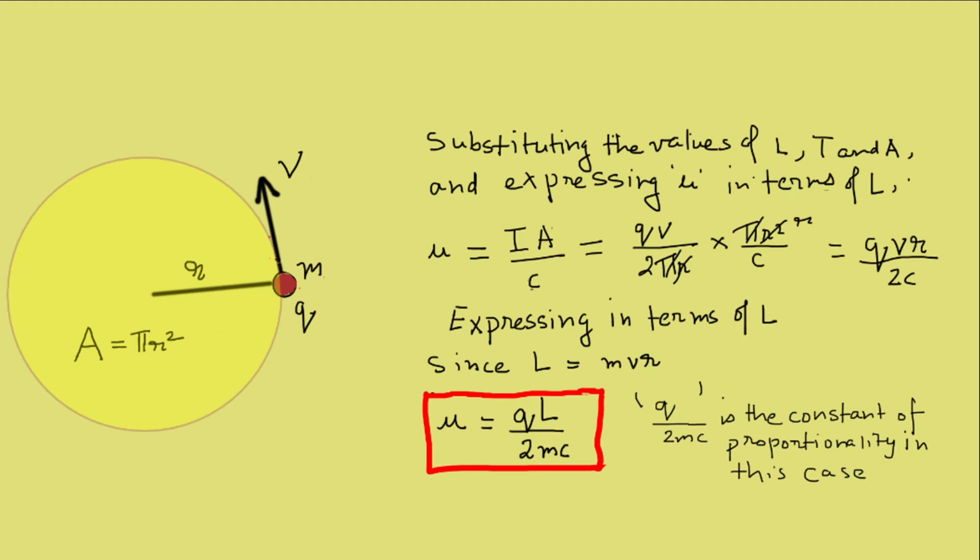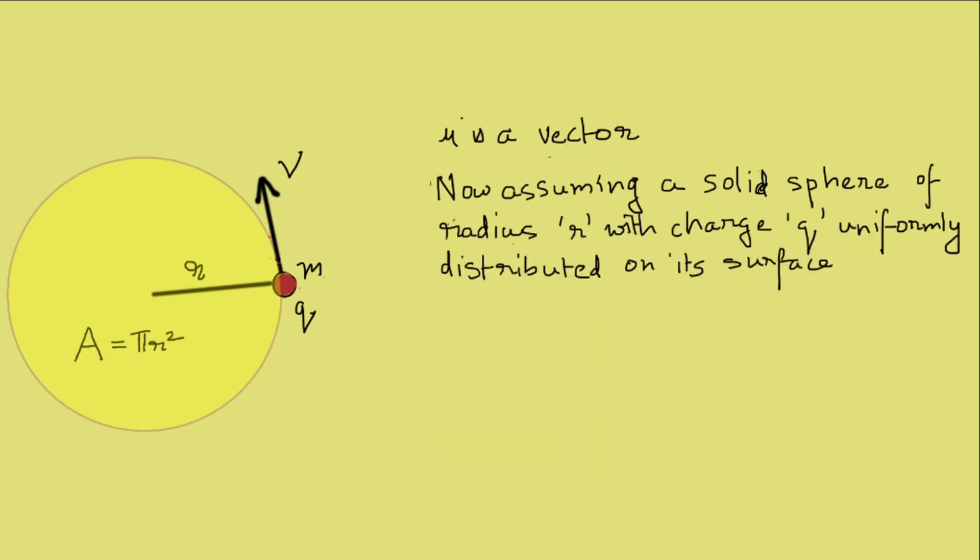q by 2mc is a proportionality constant in this case. The relation is generally true if the mass and charge coincide in space. So now we know that if a charged particle of some mass spins in some orientation it exhibits characteristics of a magnetic dipole. Now by modifying the charge and mass distributions independently we can obtain different constants of proportionality.